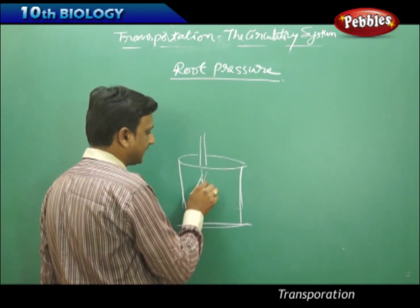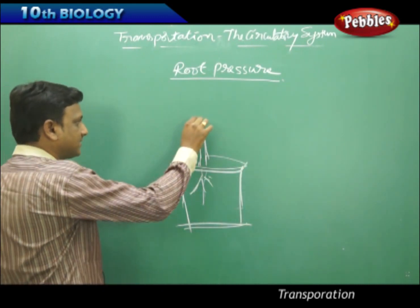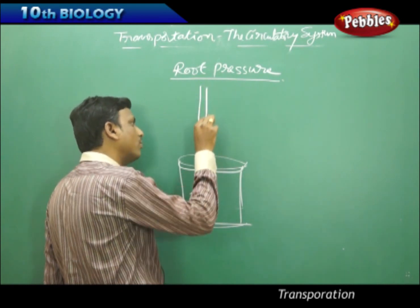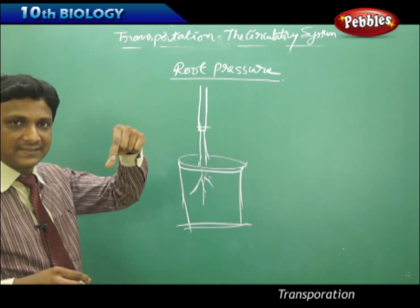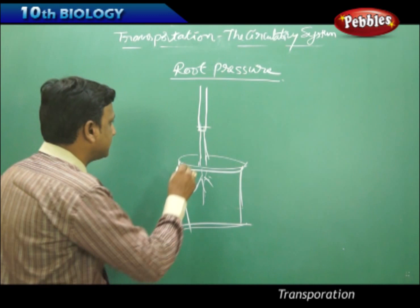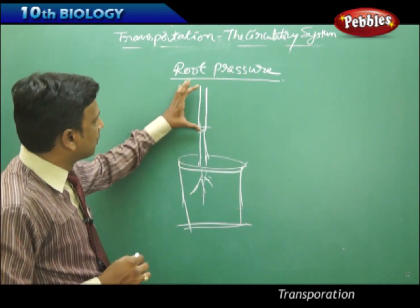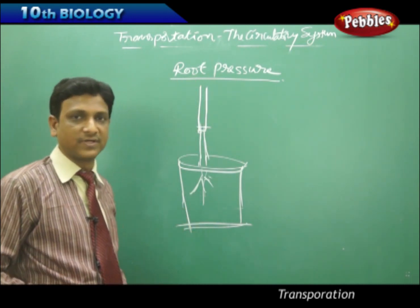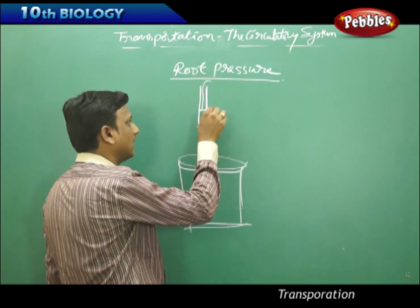For this activity, take a potted plant and cut the stem. Now take a glass tube that has the exact diameter of the stem, so that it fits exactly with no air gap. If there is any gap, use tape to make sure no air enters the setup. Attach this glass tube as an extension to the cut stem, add some water, and mark the level as M1. This is the starting water level.